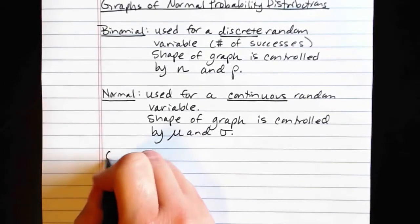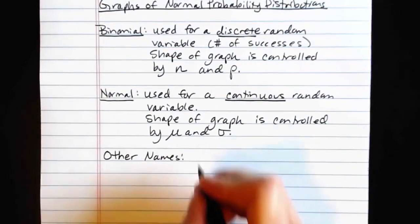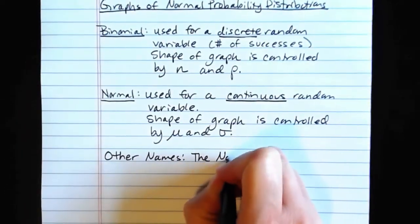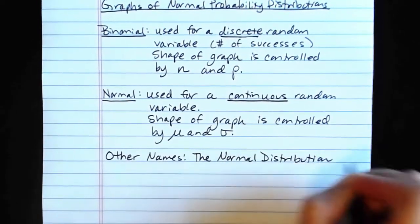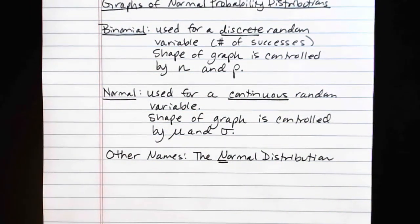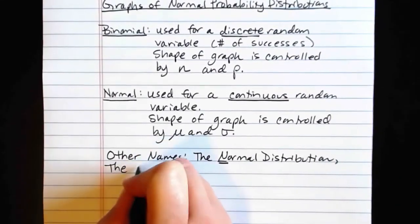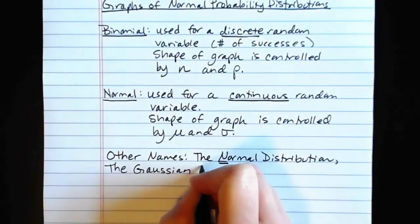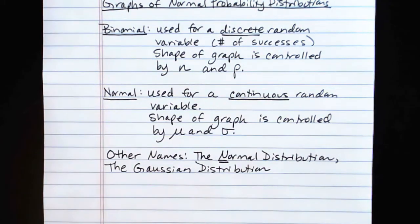Other names that the normal distribution goes by, it can just be called the normal distribution. And really there, if you're going to talk about the normal distribution, normal should be capitalized to distinguish it from the way that we use the word normal in everyday speech. The normal distribution is referring to one particular thing, so it should be capitalized. It can also be called the Gaussian distribution after Carl Friedrich Gauss.